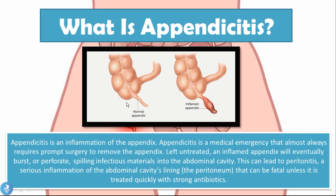If you look at the picture, we can see a normal appendix and then the inflamed or infected appendix. As you can see, the walls of the normal appendix are not very thick. So when the appendix becomes inflamed and infected, it will have a tendency to burst because that wall is not very thick and won't be able to hold all the content collecting inside.